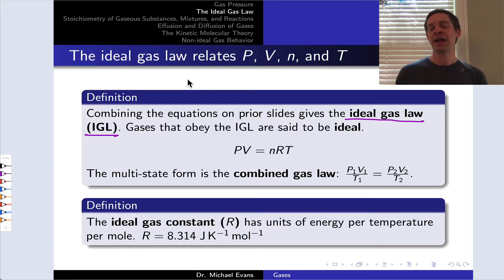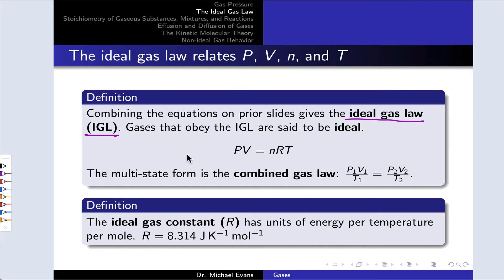Gases that obey the ideal gas law are characterized by a particular submicroscopic model that we'll dig into a little bit later. They're said to be ideal gases. And the equation is: the pressure times the volume is equal to the number of moles times a constant R times the temperature in Kelvin. PV equals nRT, or pervNert as it's sometimes called.